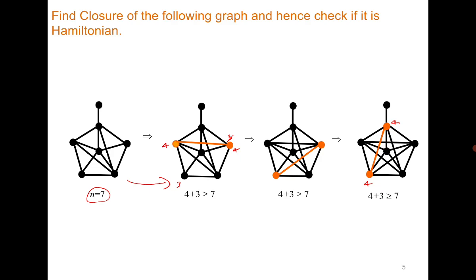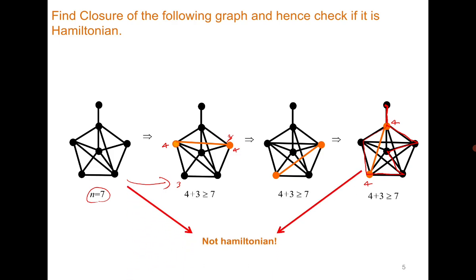This is the closure of the original graph, which is not Hamiltonian, because if you trace a cycle, these six vertices can be covered but this one vertex cannot be part of the cycle due to the presence of a cut vertex. It means the closure is not Hamiltonian, and from the above result you can conclude that the original graph is not Hamiltonian.